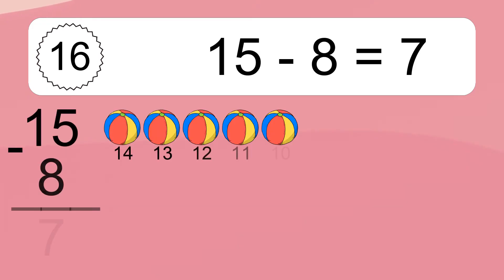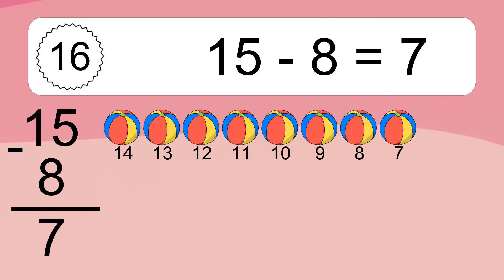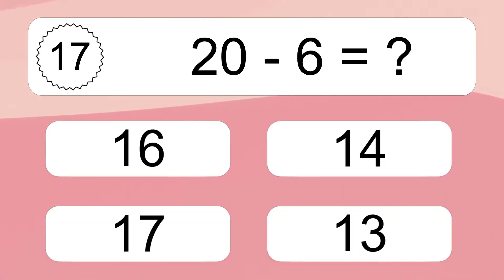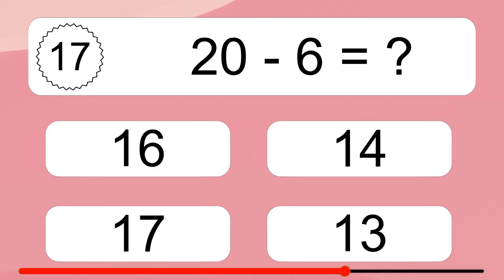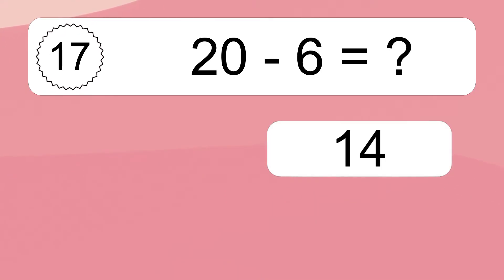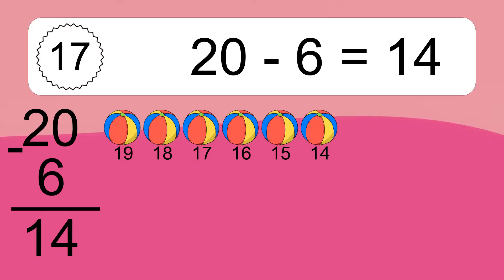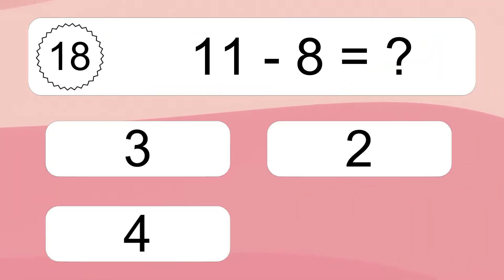15 minus 8 equals 7. Let's count it: 14, 13, 12, 11, 10, 9, 8, 7. 20 minus 6 equals what? 20 minus 6 equals 14. Let's count it: 19, 18, 17, 16, 15, 14. 11 minus 8 equals what?